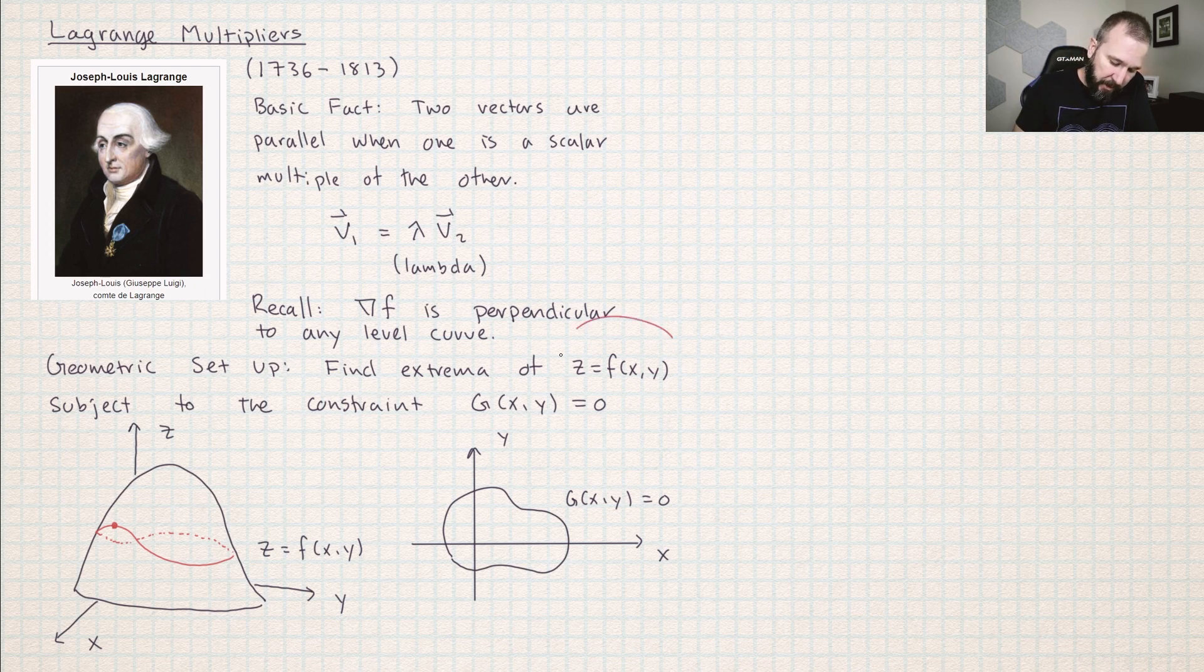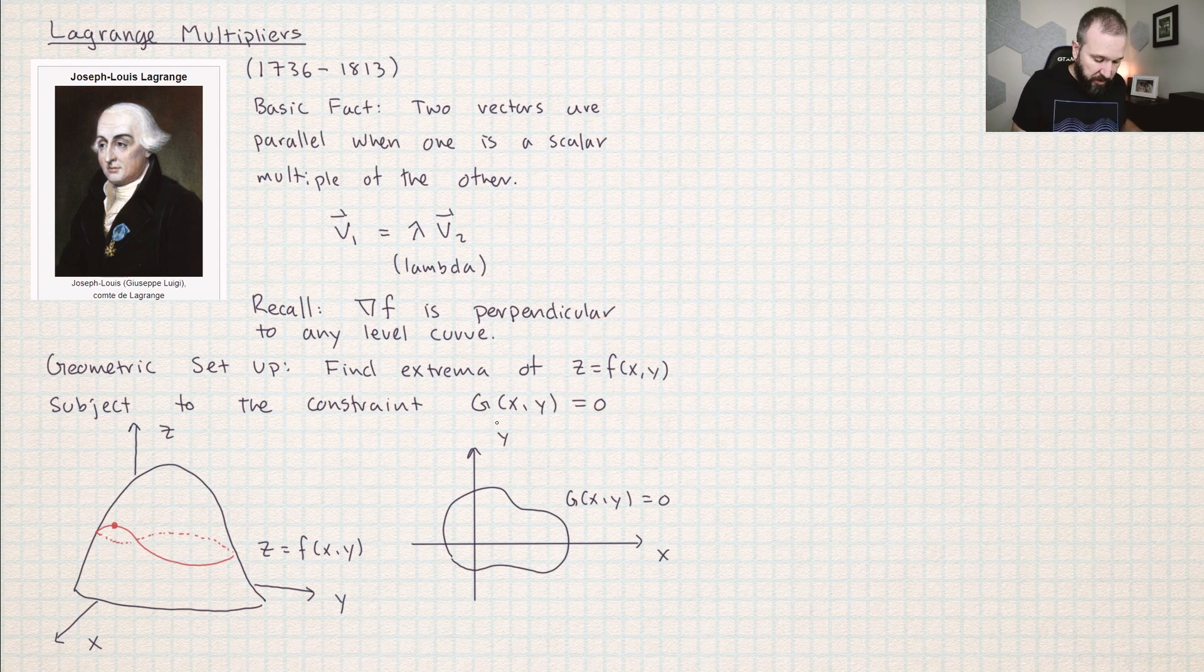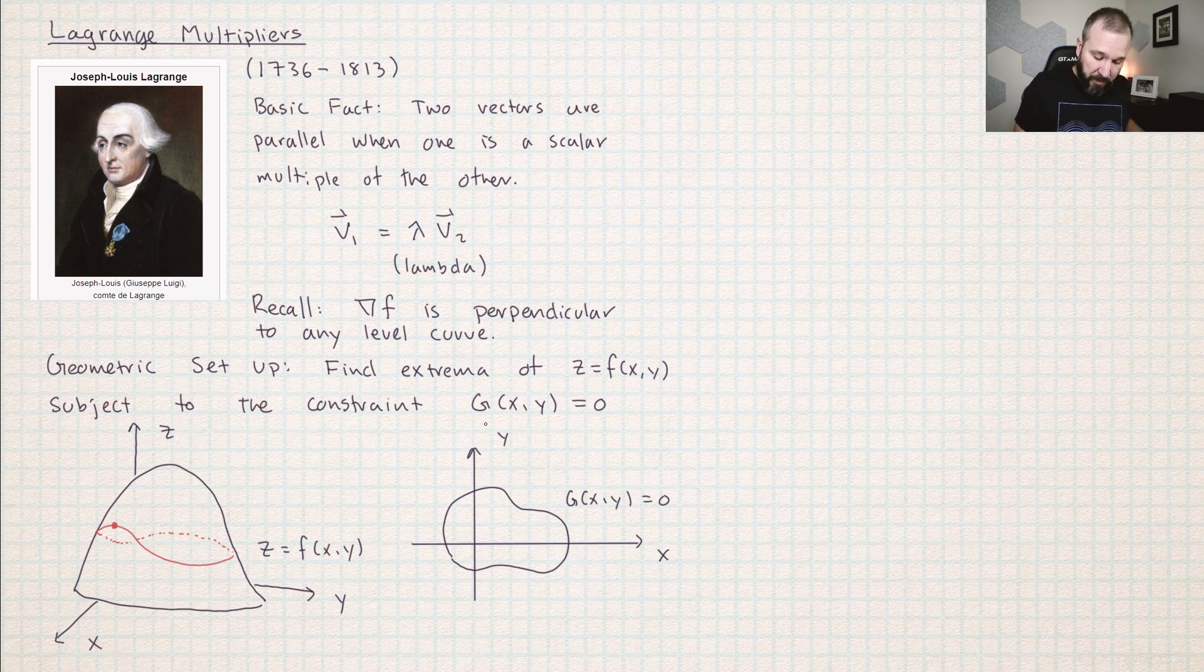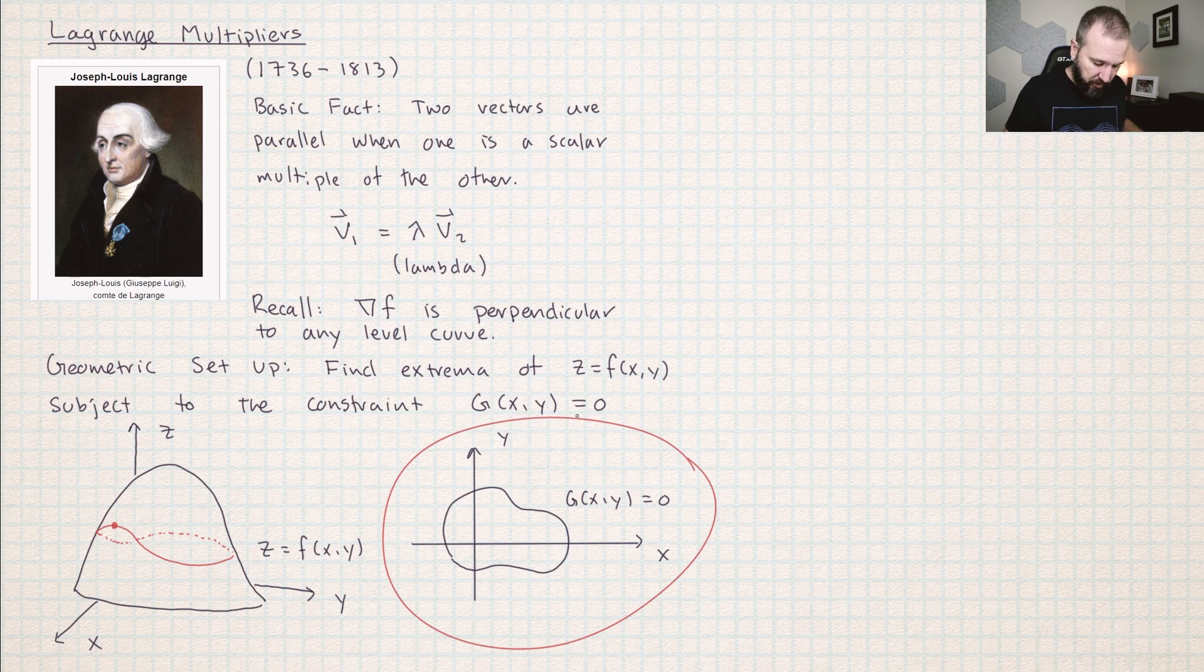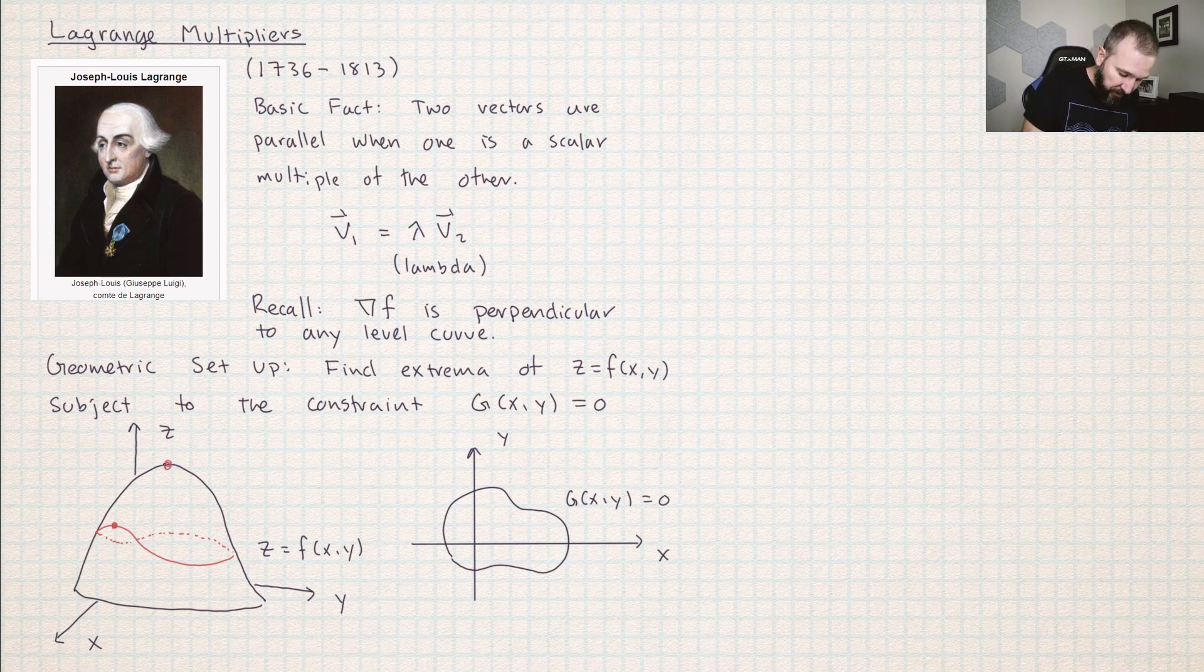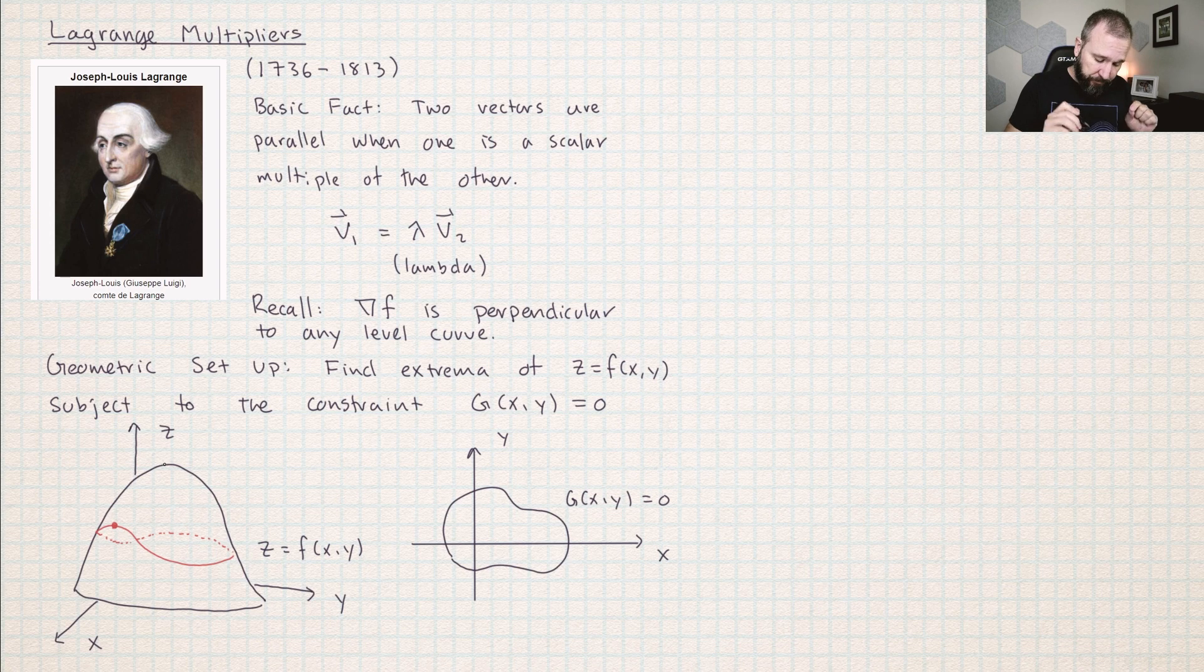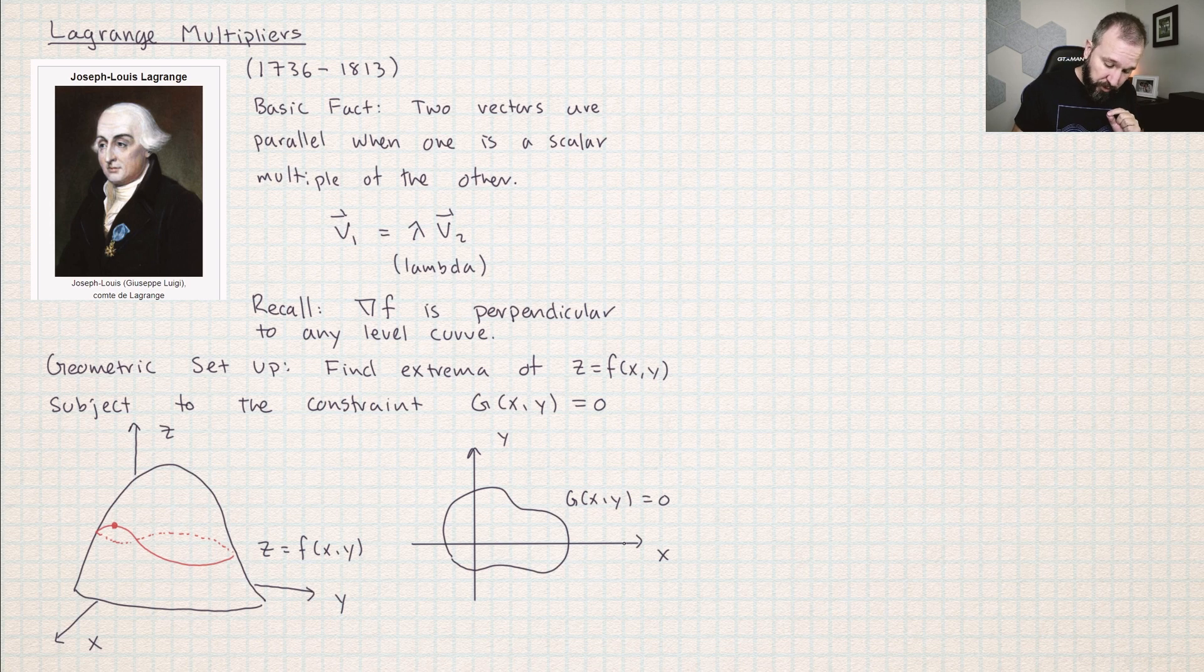The hypothesis in this problem is that we are trying to find the extreme values of some function subject to a constraint. If we interpret this problem as the function we're trying to optimize is some kind of surface, I could imagine that being a picture in 3D. Then the constraint is some implicitly defined function in the XY plane.